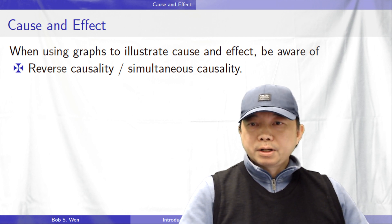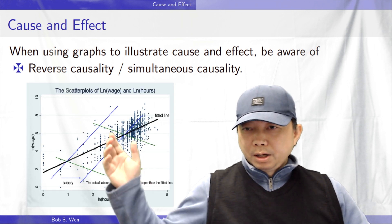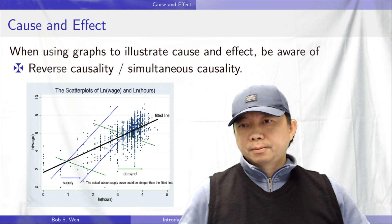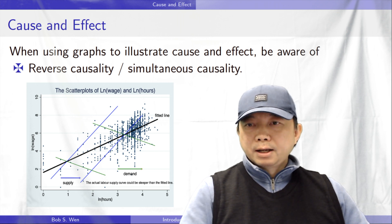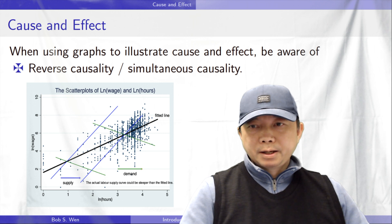We observe the hours of work and wages for each worker and draw the scatter plots. The fitted line is upward-sloping. Is it the labour supply curve?